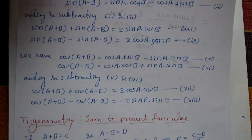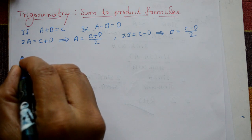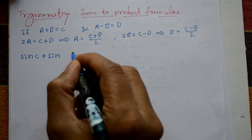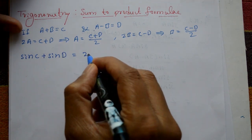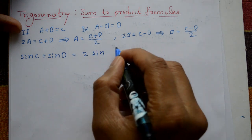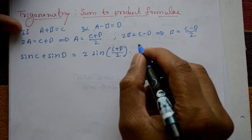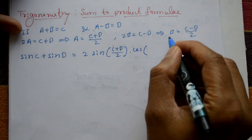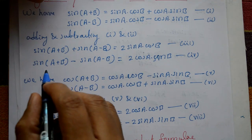Equation number three now becomes: sin C + sin D = 2 · sin((C + D)/2) · cos((C − D)/2).